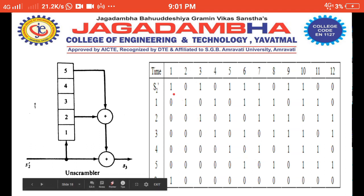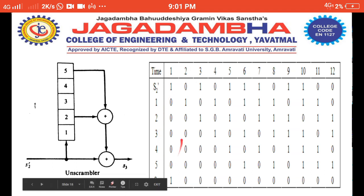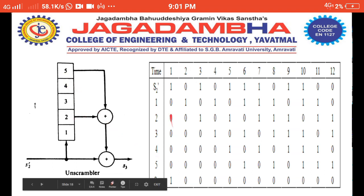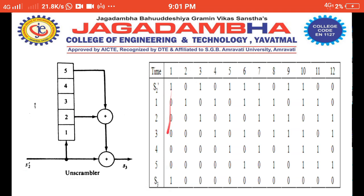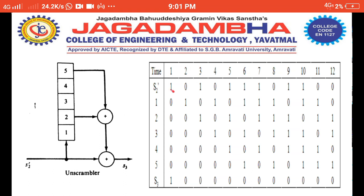Now we see the unscrambling. We have received these bits as S2'. We assume the initial content of the shift registers are 0. Note the difference here: S2' is shifted into the shift register content at position 1 after the first time period. We perform modulo-2 addition of shift register 2 and shift register 5: 0 XOR 0 = 0, and the input bit is 1, so 0 XOR 1 = 1. The first unscrambled bit is 1.